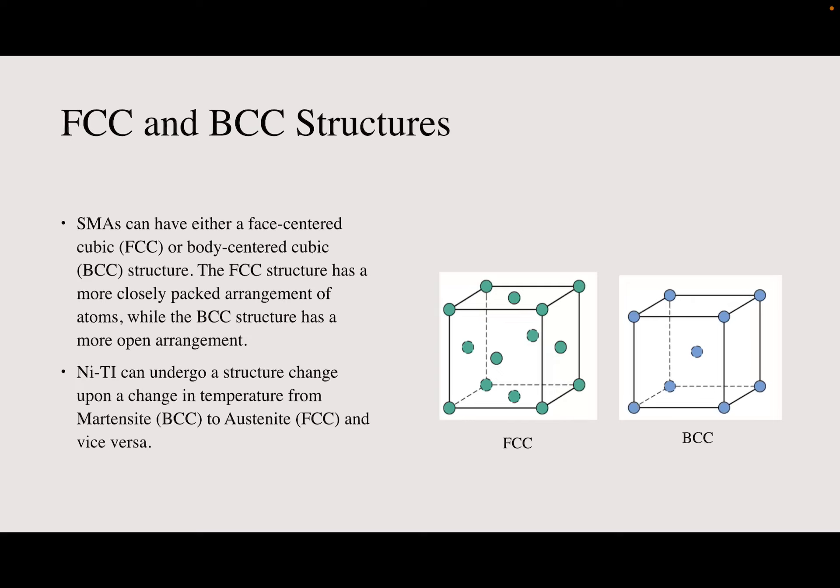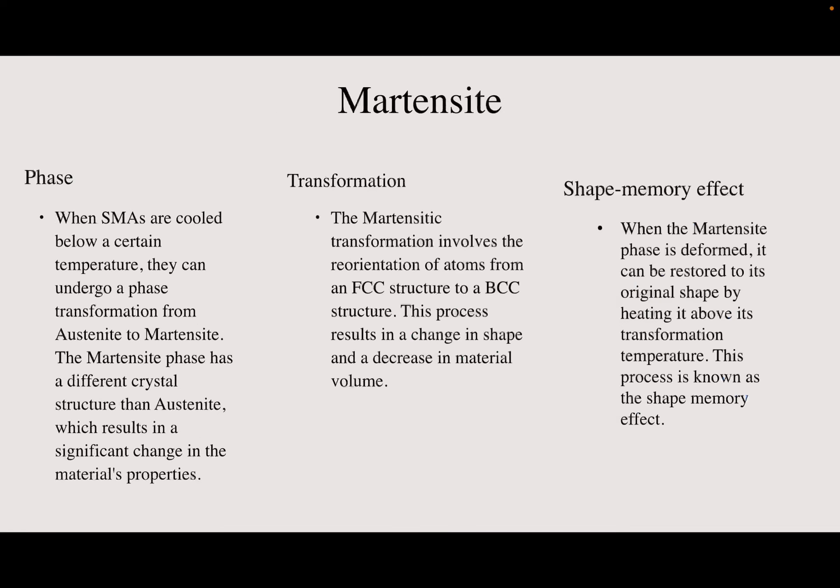NiTi can undergo a structural change upon a change in temperature from martensite BCC to austenite FCC, and vice versa. When SMAs are cooled below a certain temperature, they can undergo a phase transformation from austenite to martensite. The martensite phase has a different crystal structure than austenite, which results in a significant change in the material's properties. The martensitic transformation involves the reorientation of atoms from an FCC structure to a BCC structure, resulting in a change in shape and decreasing material volume.